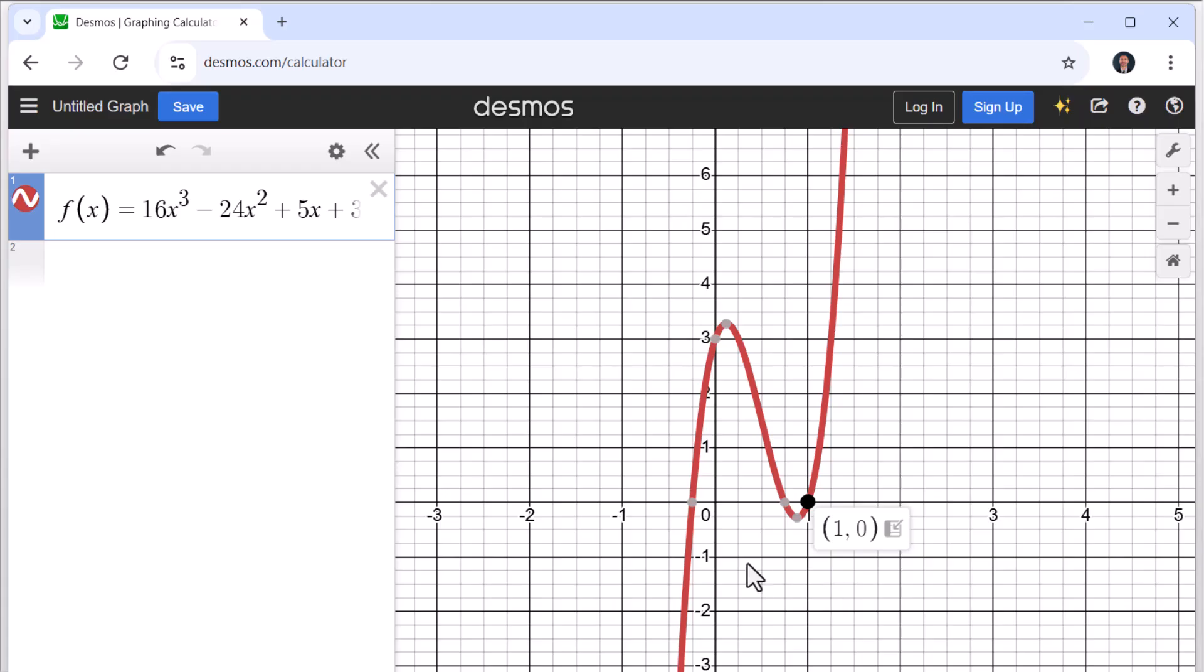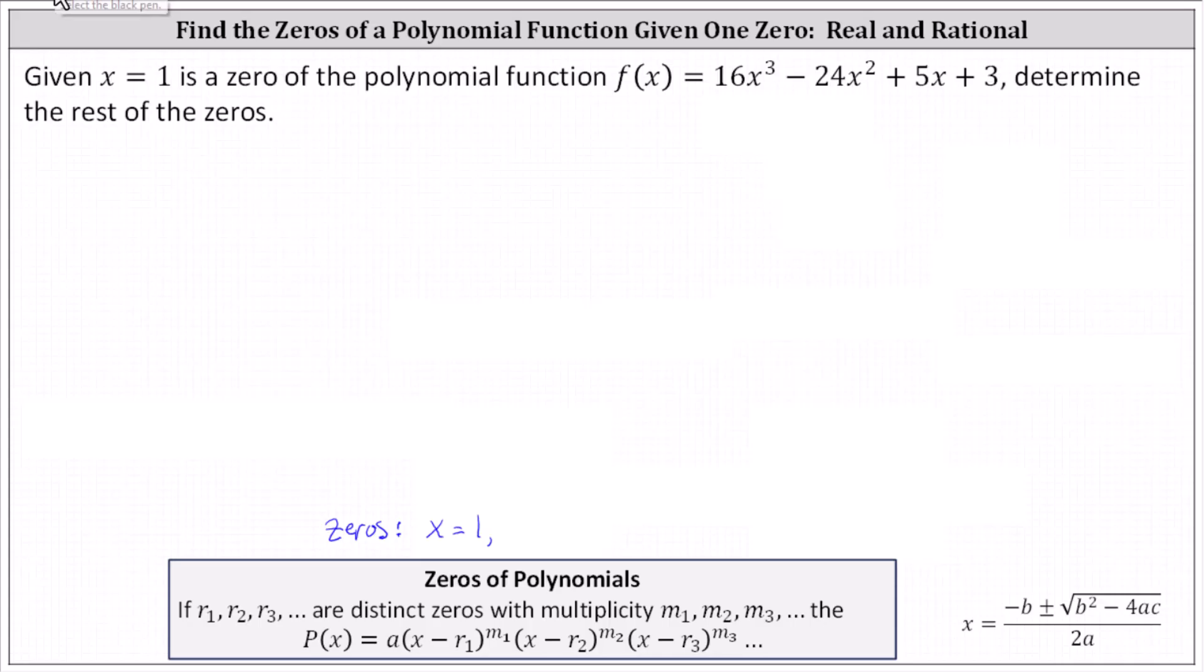And now let's work on determining the two remaining zeros without just clicking on the x-intercepts. Because x equals one is a zero, x minus one is a factor of the polynomial function. And we can write f of x in the form of f of x equals x minus one times a quadratic factor, which we can find by dividing the polynomial function by x minus one.